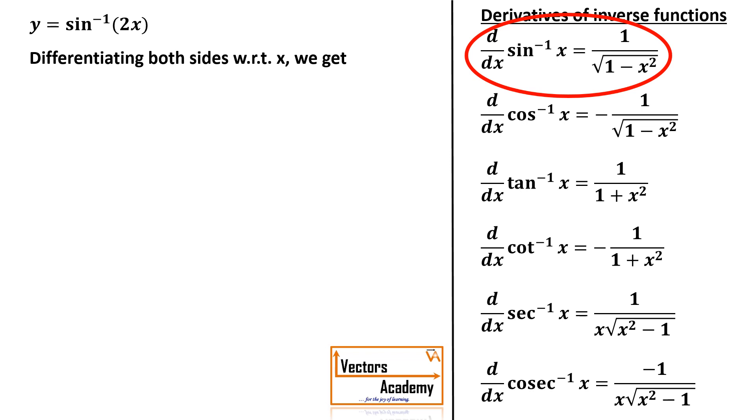You can see the derivative of sin inverse x is 1 upon root of 1 minus x square. So derivative of sin inverse 2x will be 1 upon root of 1 minus 2x square. And because x is replaced by 2x, by chain rule we will have the extra term that is derivative of 2x.